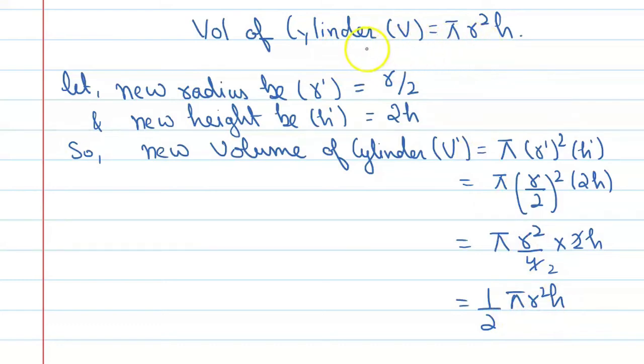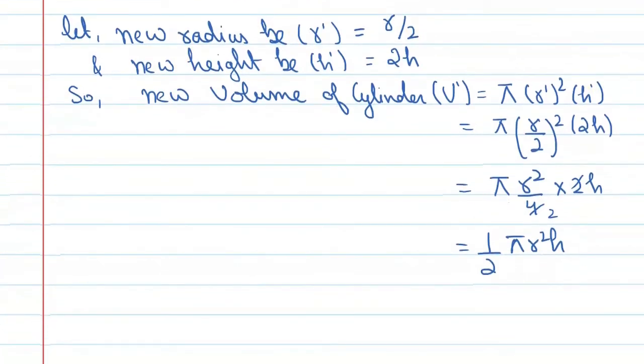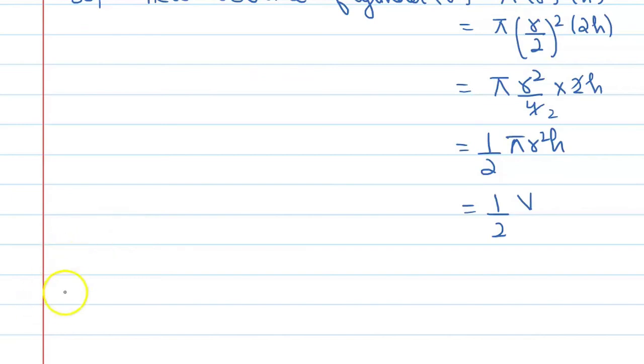π r² h was the previous volume of the cylinder. So you can say that the new volume of cylinder will be half. Okay, so from here we can write our final answer: the volume is half and the correct option is C.